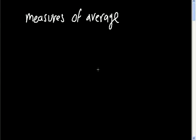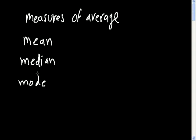We're going to start with this topic in S1 Statistics — our first topic: the different measures of average. You have three different types: the mean, the median, and the mode. All of you doing AS Maths or A2 Maths would have already done GCSE Maths and encountered these before.